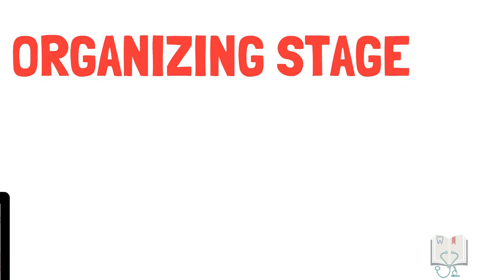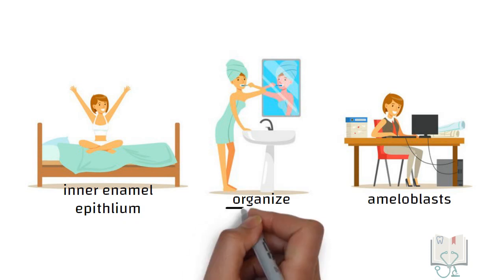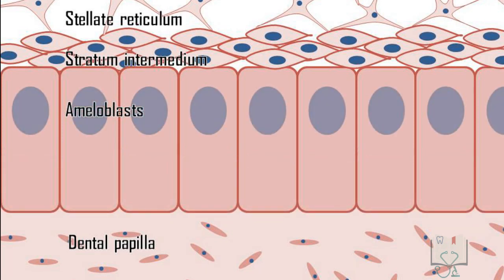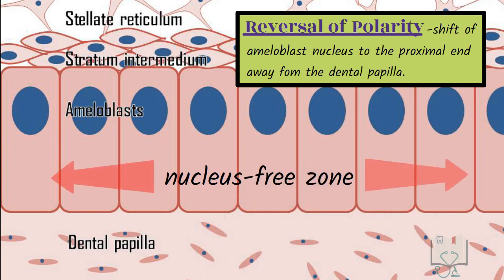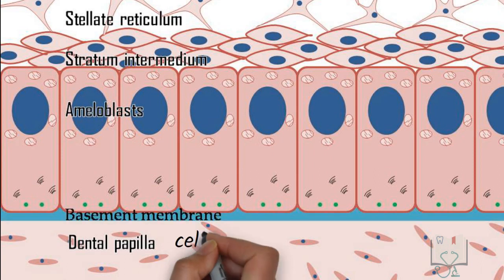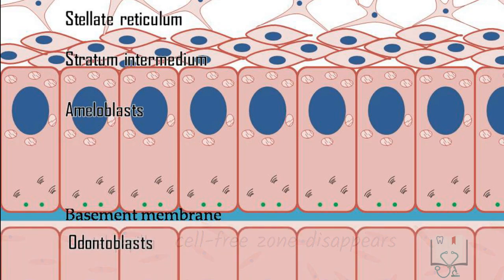Organizing stage: In this stage, the inner enamel epithelium cells organize themselves to differentiate into ameloblasts, hence the name organizing stage. The cells increase in size and become tall columnar. The nucleus shifts towards the proximal end — this shift is called the reversal of polarity — which creates a nucleus-free zone in the distal half of the ameloblasts. The mitochondria shift towards the proximal end, whereas Golgi bodies and centrioles move to the distal end. The basement membrane is still present, whereas the cell-free zone of the dental papilla disappears as the ameloblasts elongate and come in direct contact with the cells of the dental papilla to differentiate them into odontoblasts.